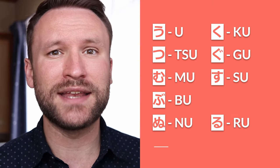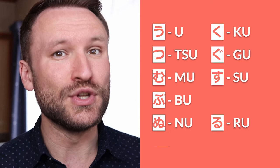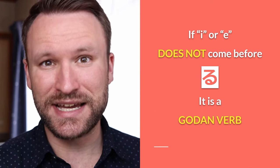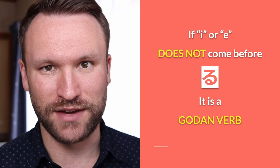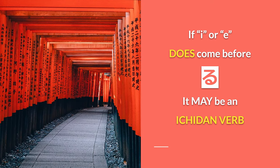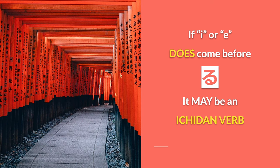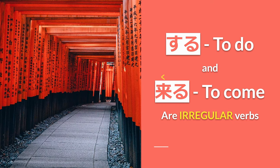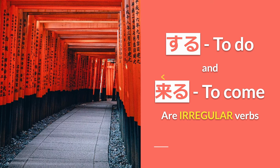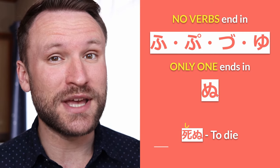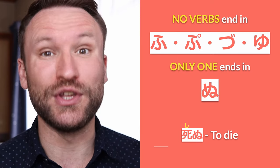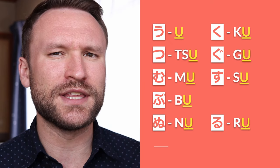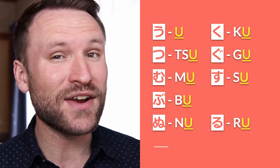Godan verbs are verbs that, in their dictionary form, end in a range of sounds, and sometimes do. If the sound i or e doesn't come before do, then it's definitely a godan verb. If i or e does come before do, it may be an ichidan verb. The verbs suru and kuru are irregular verbs. No verbs in Japanese end in fu, pu, zu, or yu, and only one verb in modern Japanese ends in nu — that is shinu, or 'to die.' All verbs in their dictionary form end with a U sound.